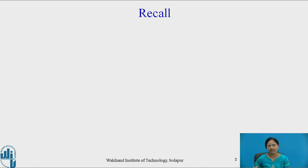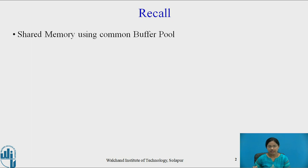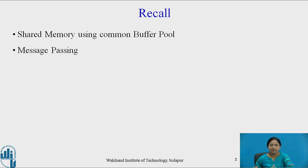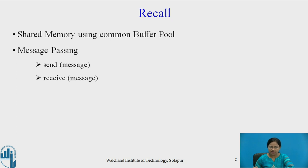Recall from the last video that we studied shared memory using a common buffer pool, which is one of the methods for inter-process communication. We studied the producer-consumer problem using shared memory. Another way of inter-process communication is message passing. Message passing uses two primitives: send message and receive message. Using these two primitives, two processes can communicate with each other by sending messages.